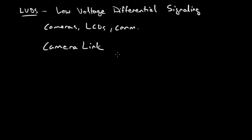LVDS is not an encoding spec. It's not something like 8B/10B. It's just a method for transmitting differential signals from source to load. So how does it look?